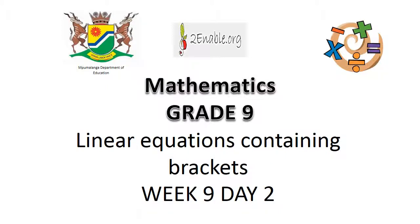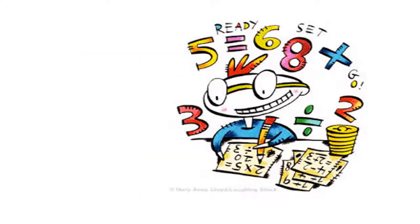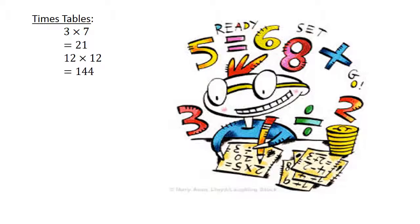Linear equations containing brackets. Mental math. Times tables: 3 times 7 equals 21. 12 times 12 equals 144.